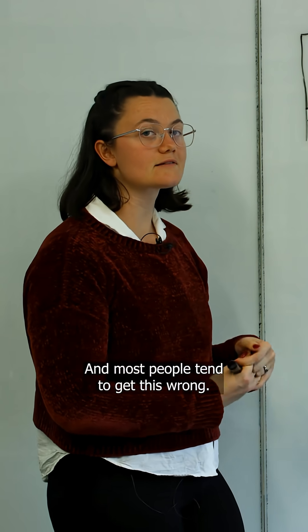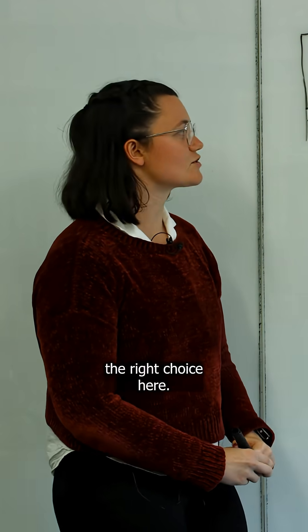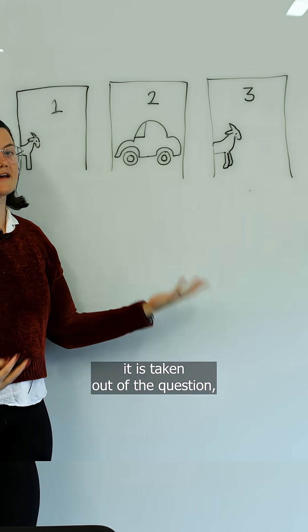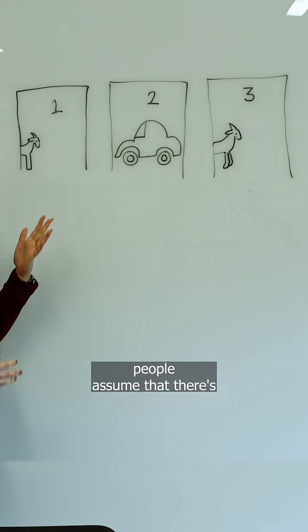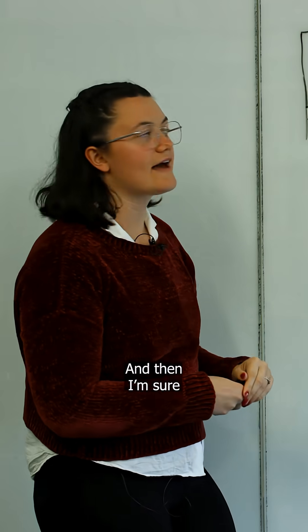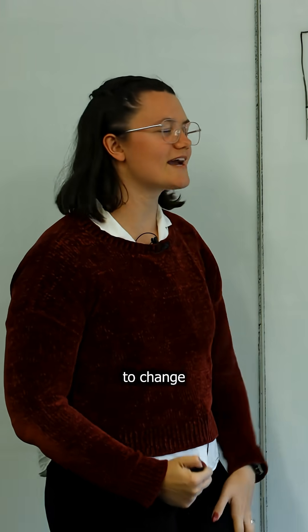Most people tend to get this wrong. In fact, in some studies, it was as low as 13% of people who made the right choice. Intuitively, once one door with the goat behind it is taken out of the question, people assume there's a 50-50 chance that the car is behind the door you've already chosen. Psychologically, people have their lucky numbers or they're stubborn and they don't want to change given the choice.